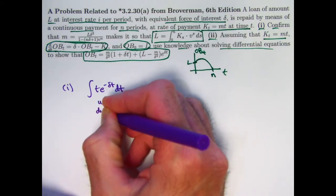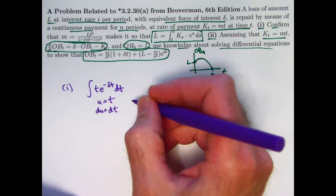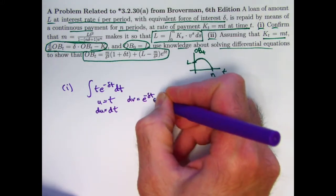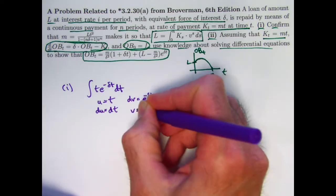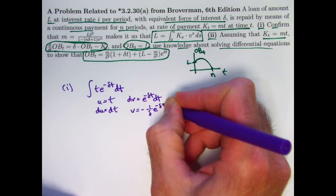And if you're back, you can see how I'm doing it. I'm letting U equal T, and therefore dU is dT. Letting dV be E to the negative delta T dT, and therefore by integrating that, I get V to be negative 1 over delta E to the negative delta T.